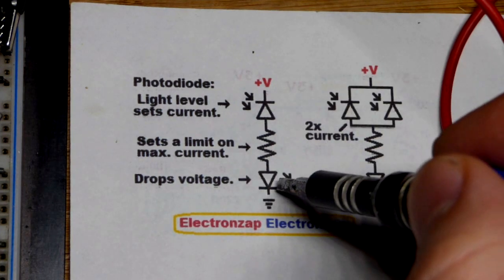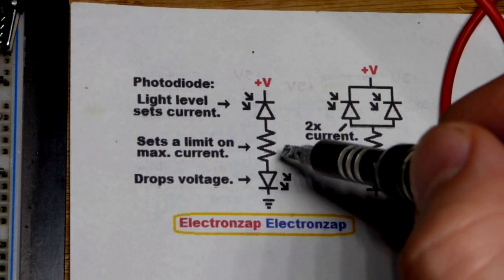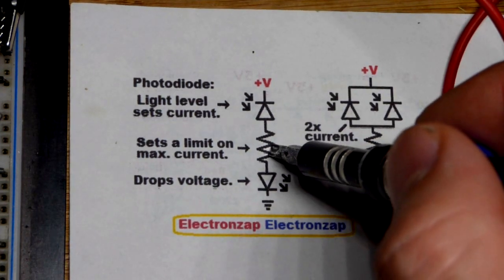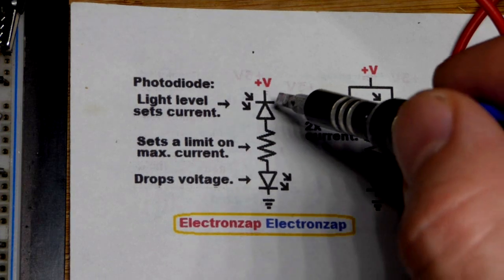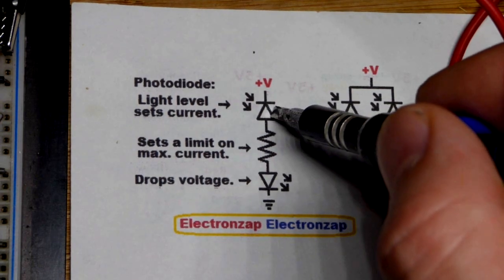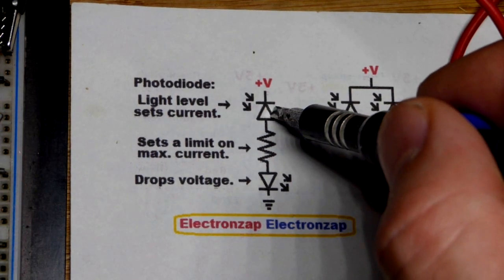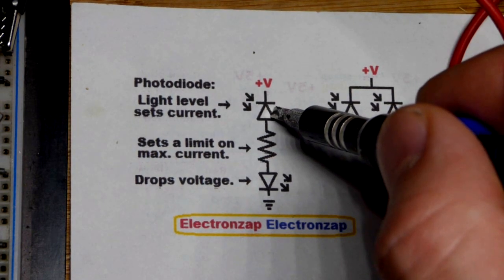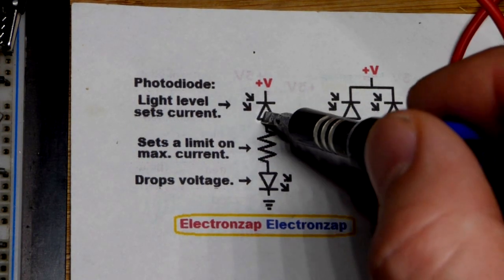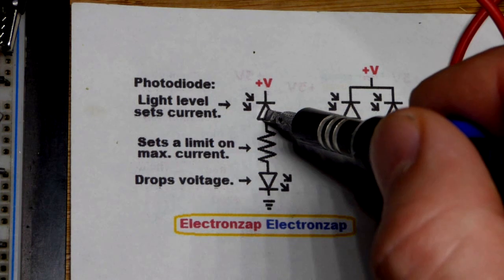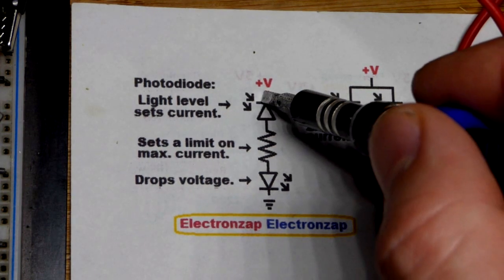Different order here, but the LED does drop some voltage. Resistors will limit current, but if the photo diode is limiting the current even further, then the photo diode sets the current.